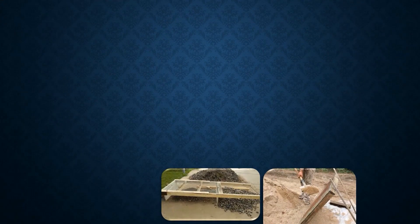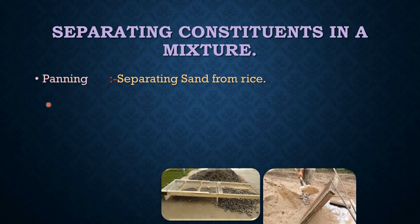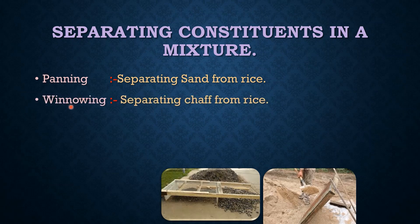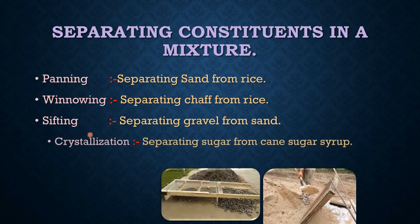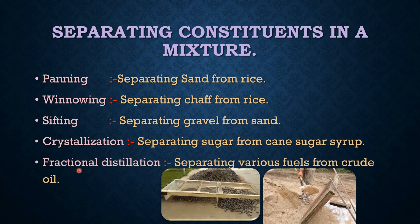The next topic covers methods for separating constituents in a mixture. These include: winnowing, for separating sand from rice; renewing, for separating chaff from rice; sieving, for separating gravel from sand; crystallization, for separating sugar from cane sugar solution; and fractional distillation, for separating various fuels from crude oil.